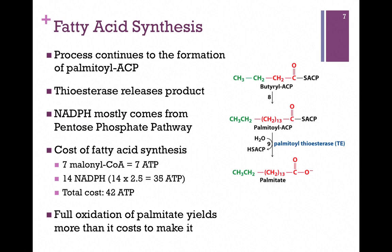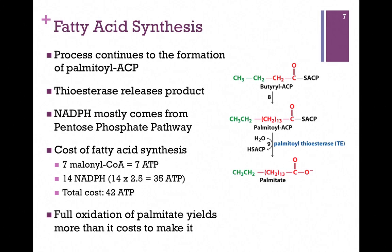The NADPH cost in carrying out fatty acid synthesis comes mostly from the pentose phosphate pathway, which is present in all cells. The cost of fatty acid synthesis to produce one molecule of palmitate: it costs us seven molecules of coenzyme A, and for each one there's one ATP cost per malonyl-CoA. We also use two molecules of NADPH per round — that's 14 total — representing a stored energy of about 35 ATP. So the total cost to make palmitate is roughly 42 ATPs. However, if we turned around and oxidized palmitate, we'd actually get more ATP out of it than what we put in.